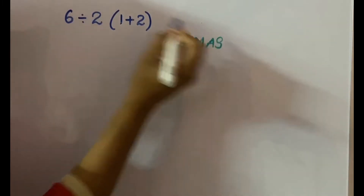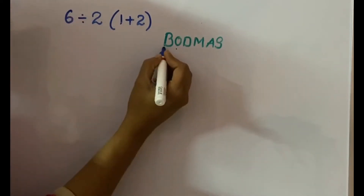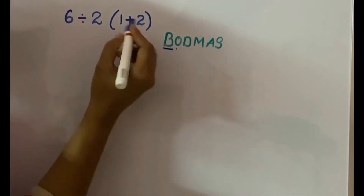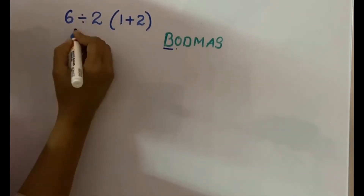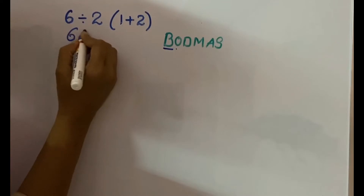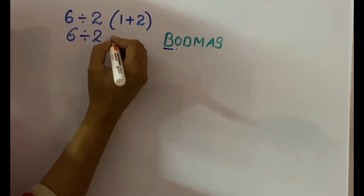Let's solve this. First, we have to do the bracket. Inside the bracket, there is an addition operation. Let's do that: 1 plus 2, it's 3.